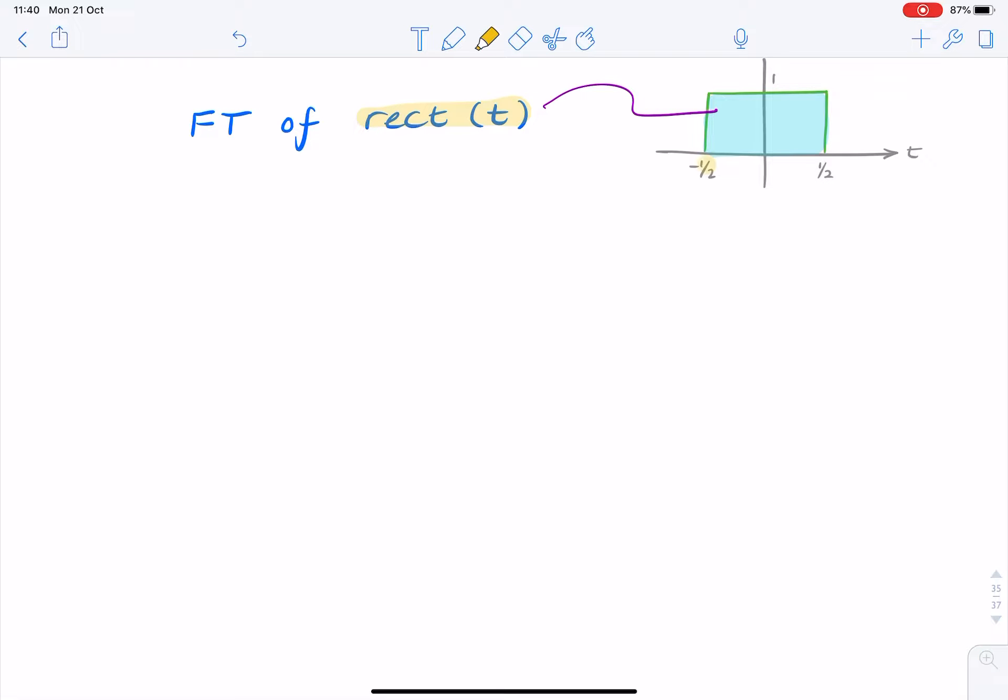We have a pulse that lasts for one second, from minus half to half, with an amplitude of one, and the question is, what's the Fourier transform? What's that in the frequency domain?